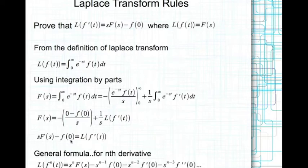Now for the nth derivative, we have this general formula which says that the Laplace transform of the nth derivative of f of t is equal to s to the power of n times capital F of s, minus s to the power of n minus 1 times f of 0, minus s to the power of n minus 2 times f dash evaluated at t equal to 0, and so on and so forth.